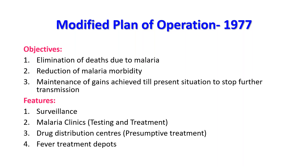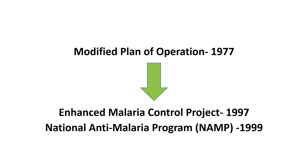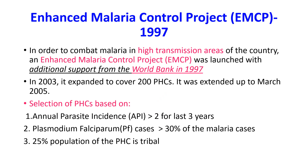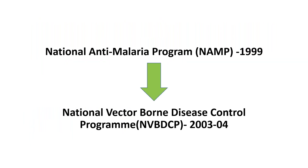After the Modified Plan of Operation in 1977, the Enhanced Malaria Control Project was started in 1997, and the National Anti-Malaria Program (NAMP) was started in 1999. The EMCP was launched with additional support from the World Bank to combat malaria in high transmission areas. In 2003 it expanded to cover 200 PHCs and was extended up to March 2005. Selection of PHCs was based on annual parasite incidence greater than 2 for the last three years, Plasmodium falciparum cases more than 30% of all malaria cases, or 25% population catered by that PHC living in tribal areas.